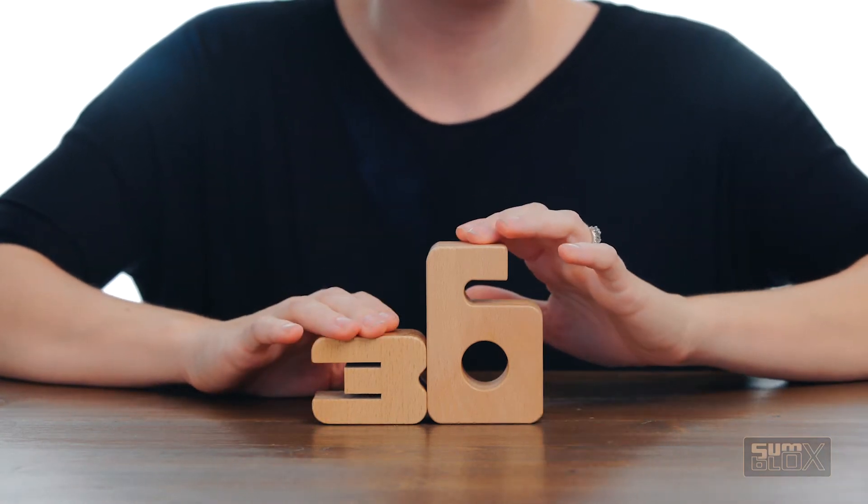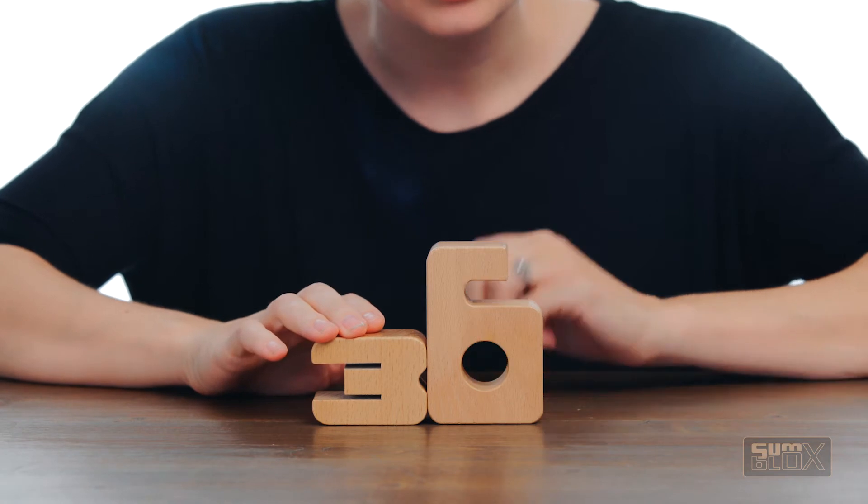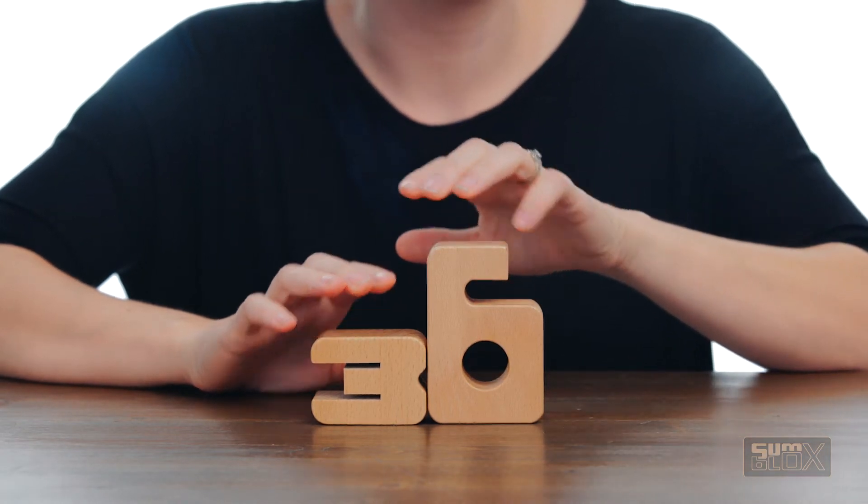We can take 3 sixths and break it down to 1 half by dividing the numerator and the denominator into equal parts.